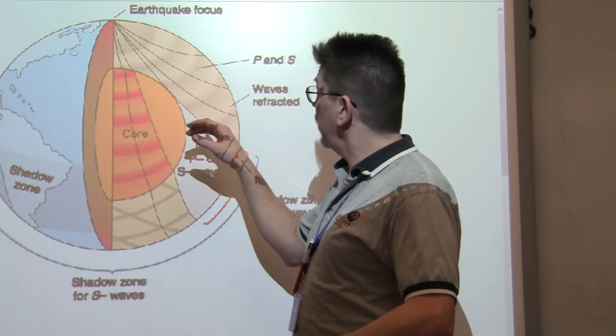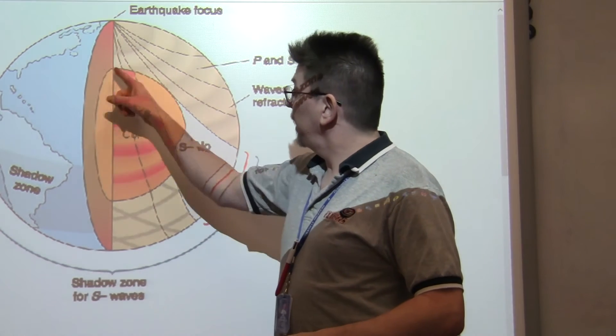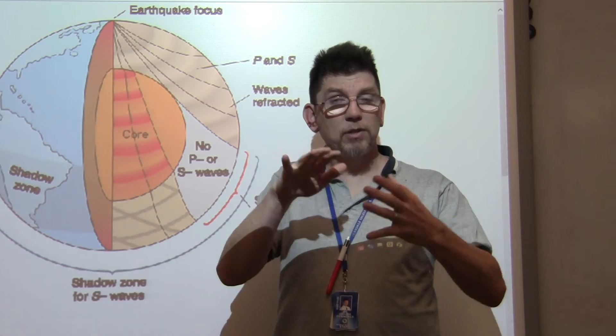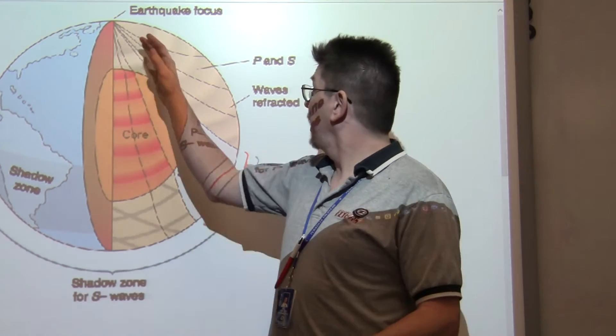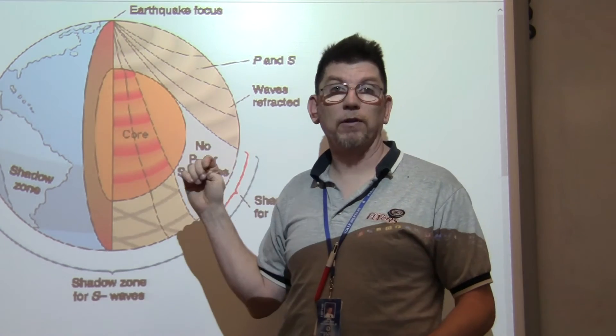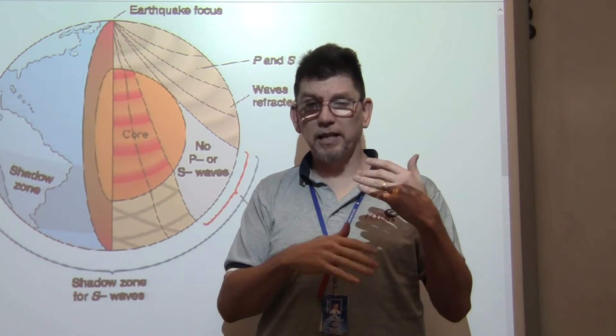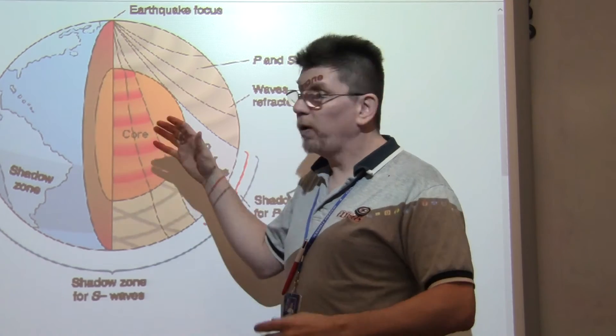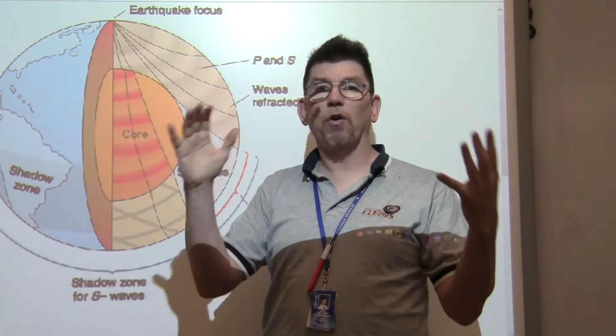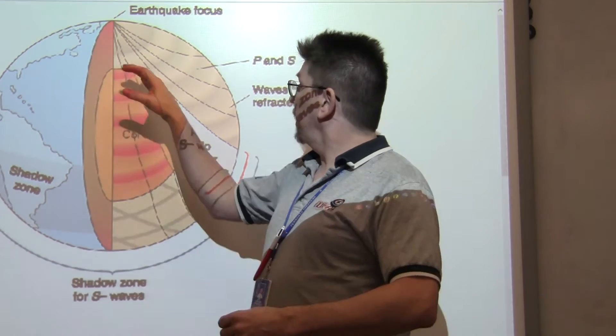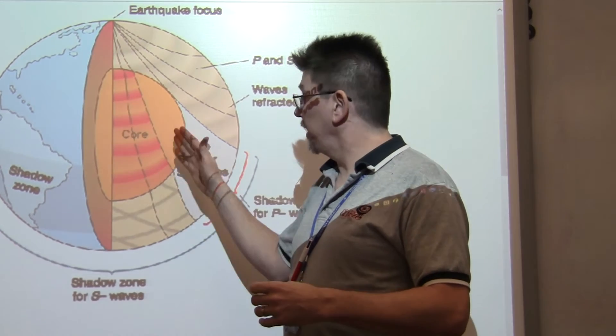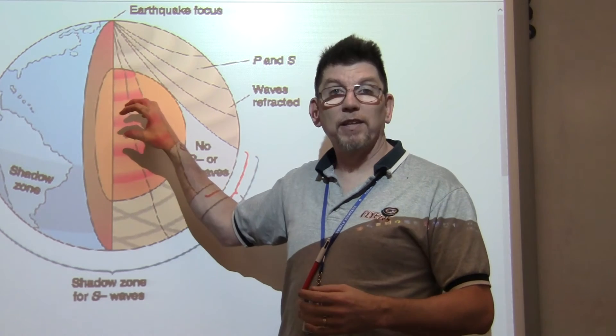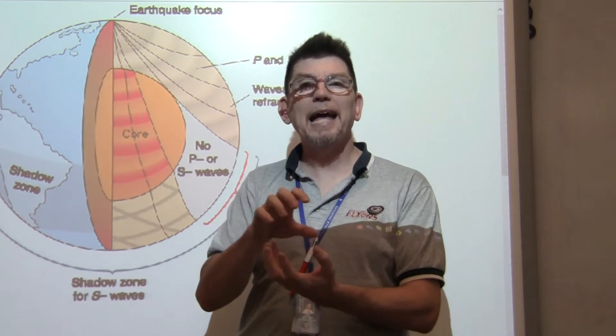So they inferred through all this earthquake data that the core was liquid, that there was a liquid core there. That worked for a while, but when they kept pouring over them, they weren't being deflected the way that they thought they should be if it was an all-liquid core. By looking at how the P waves were being re-deflected as they moved through, the innermost part of this liquid core had to be solid.